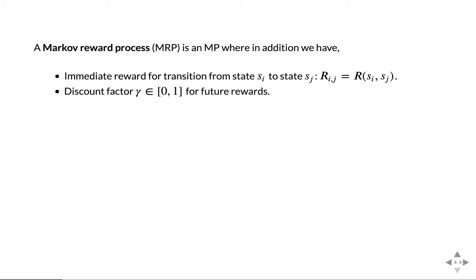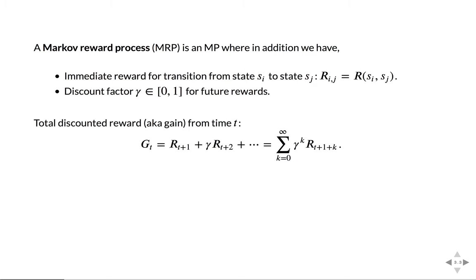A Markov reward process adds, additionally to the Markov process, an immediate reward that you gain by transitioning from state to state. You also add a discount factor gamma. Once you have these rewards for transitions, you can calculate the gain at time t, or the total discounted reward, which means you sum over future rewards from time t+1 into the future and discount every step by gamma. This gives you a Markov reward process.